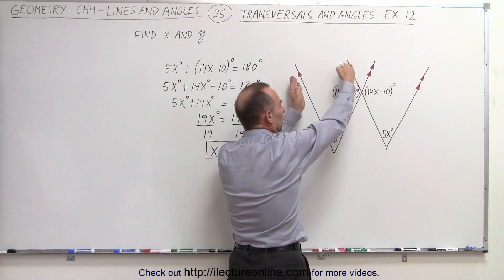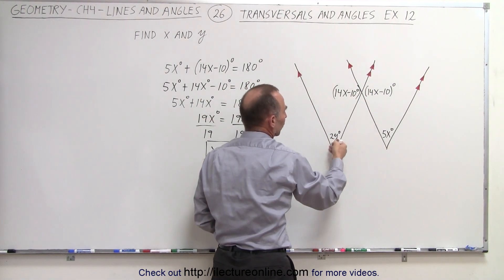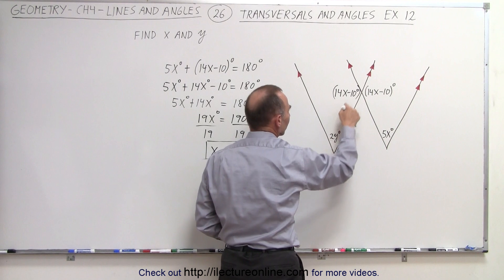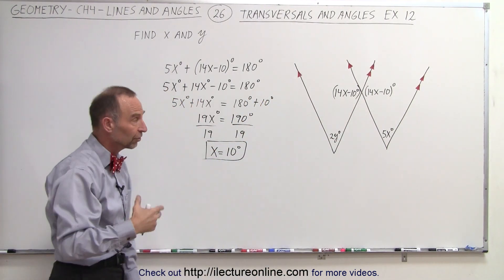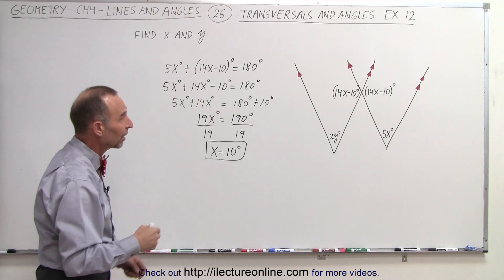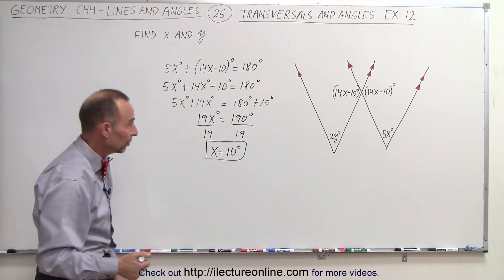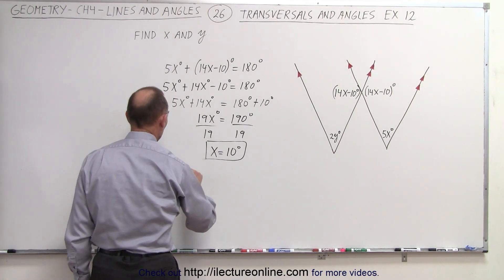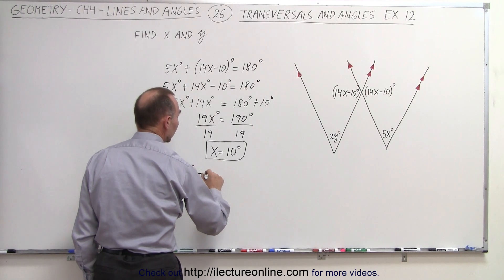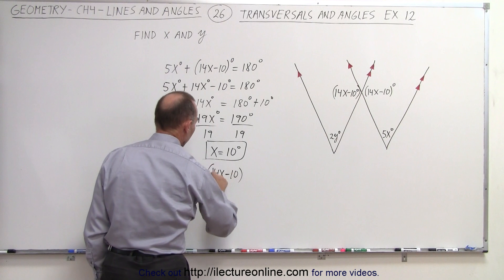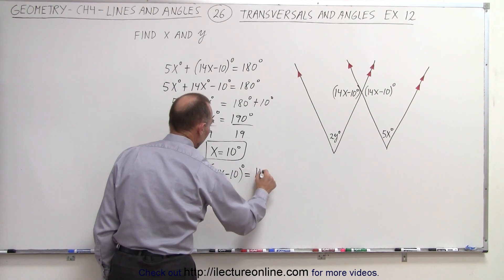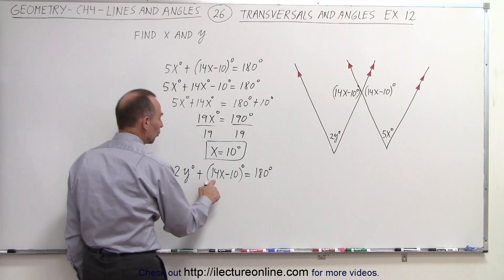And then if you take a look at these two parallel lines, then this becomes a transversal, and then you can say that these two angles right here are consecutive interior angles. And by definition, consecutive interior angles must add up to 180 degrees. They're supplementary, which means that 2y degrees plus 14x minus 10 degrees is equal to 180 degrees.